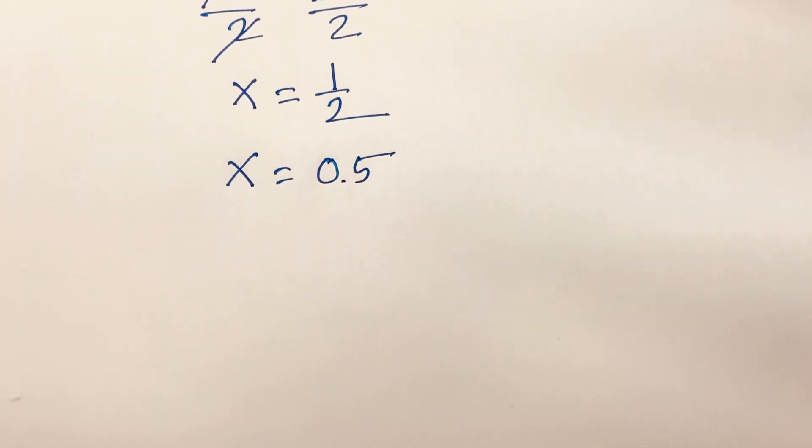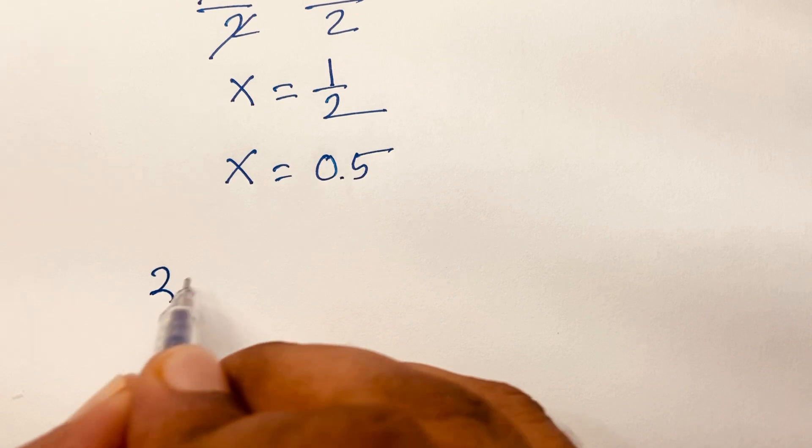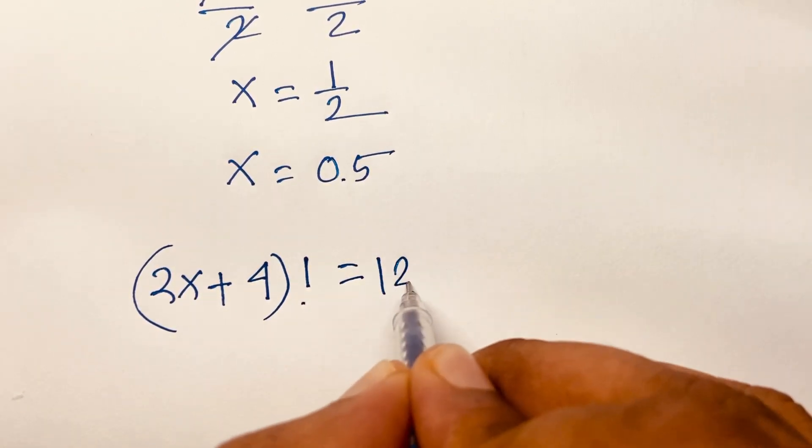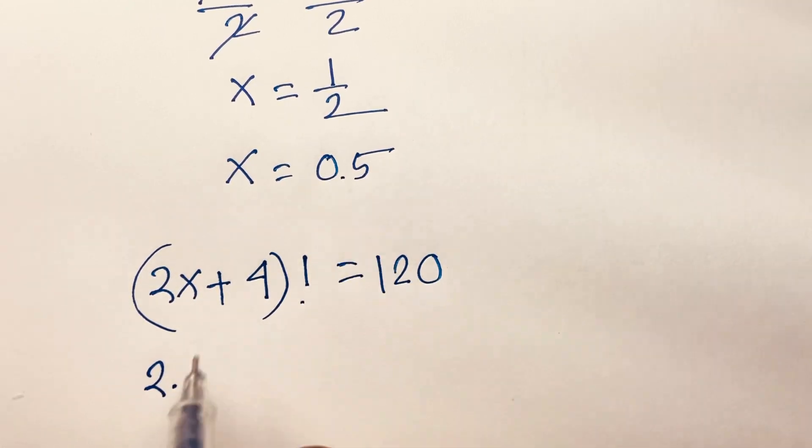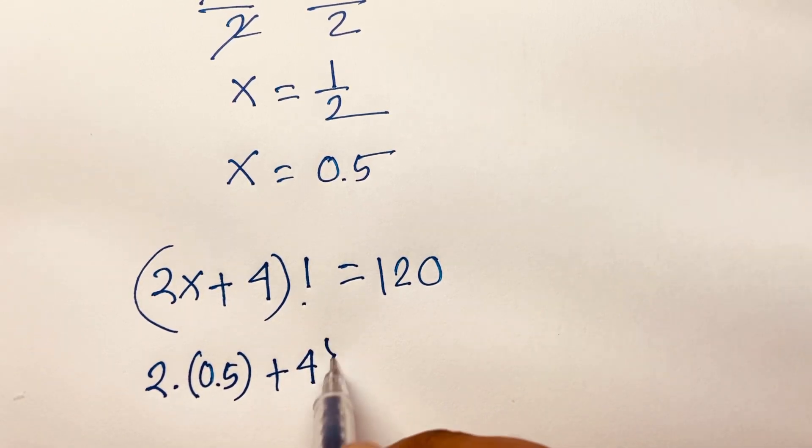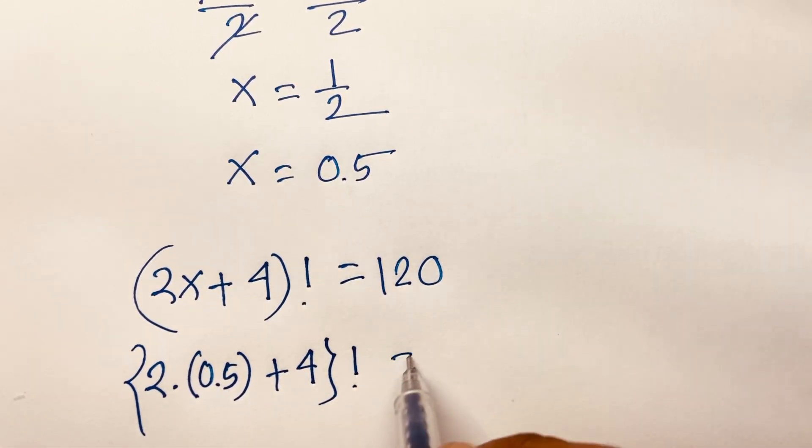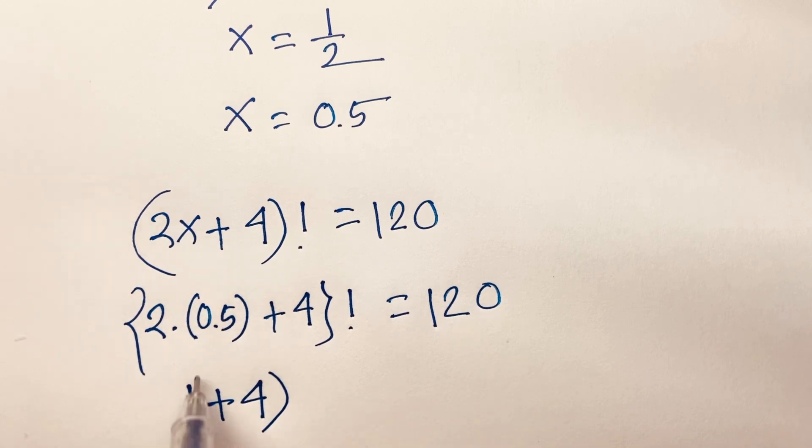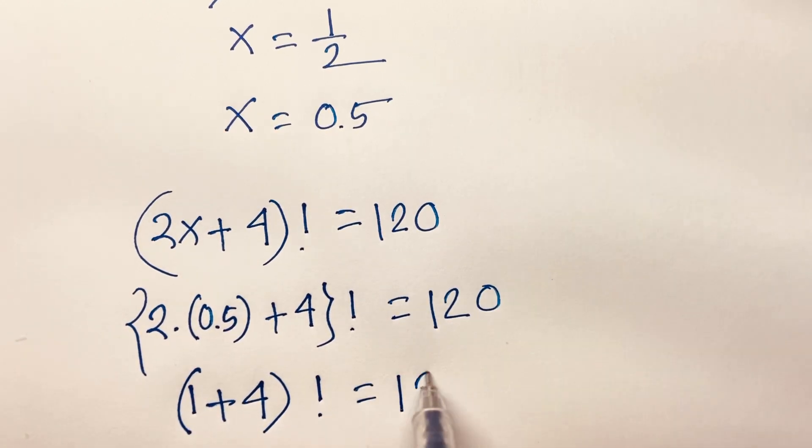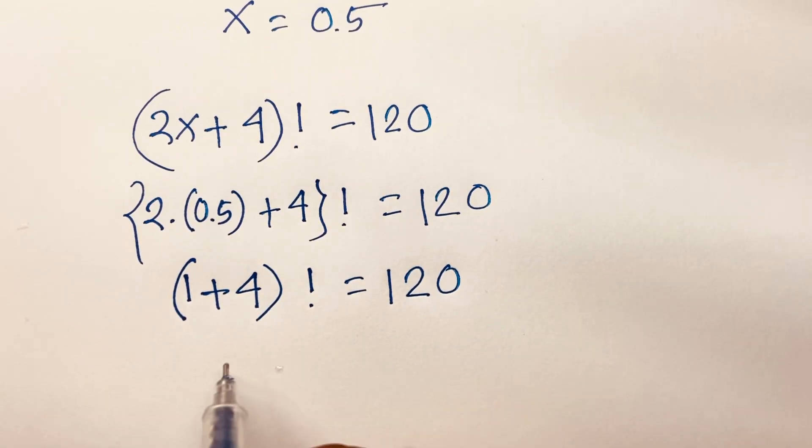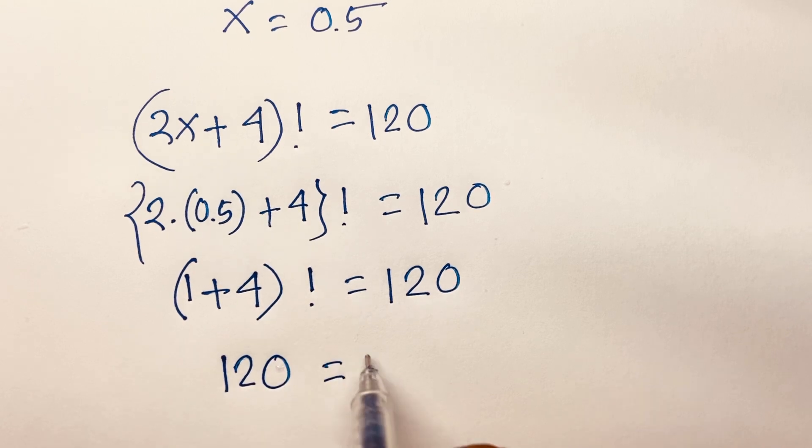Let's check our equation: (2x+4)! = 120. Substituting, 2 times 0.5 plus 4 in brackets, factorial, equals 120. So 1 plus 4 equals 5, and 5 factorial equals 120. It checks out: 120 = 120.